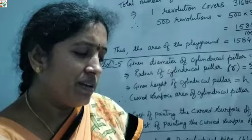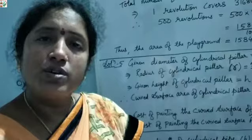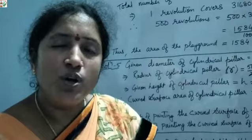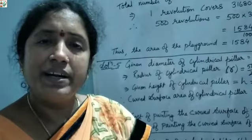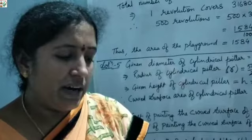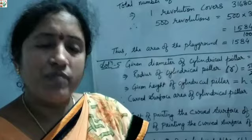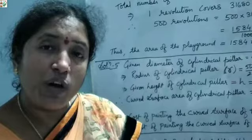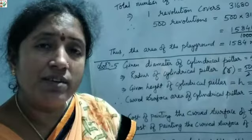It is already stated we need the curved surface area. Radius and height are given, so we use the formula 2πRH. After finding the curved surface area, we multiply by the rate of rupees 12.50 per meter square to get the total cost of painting.